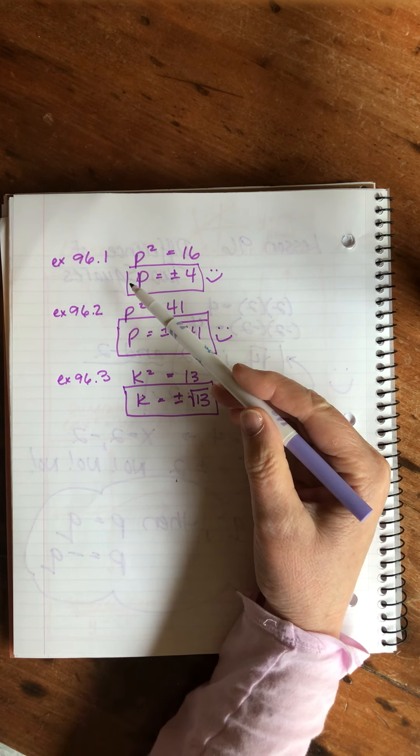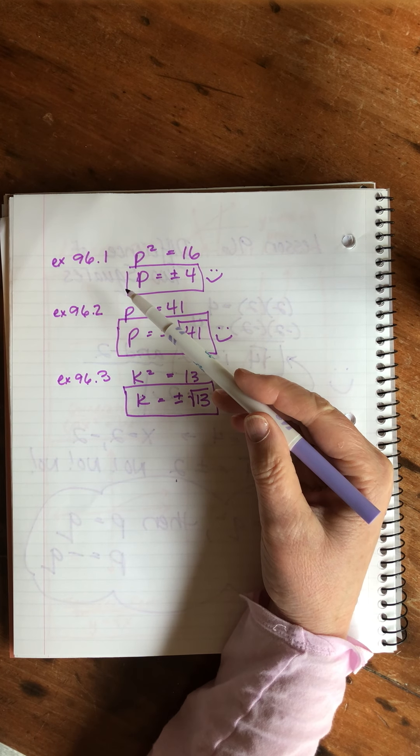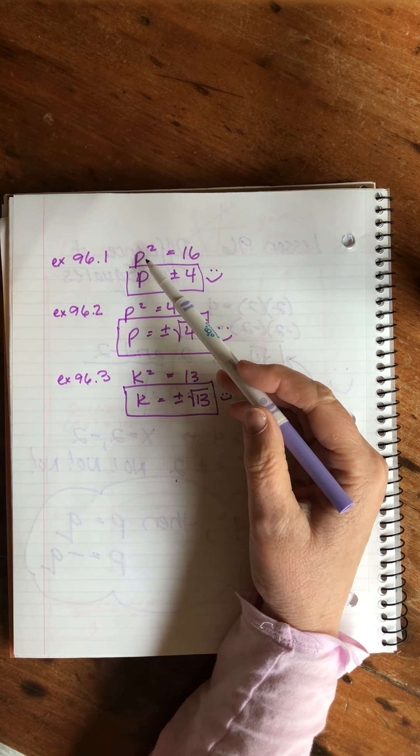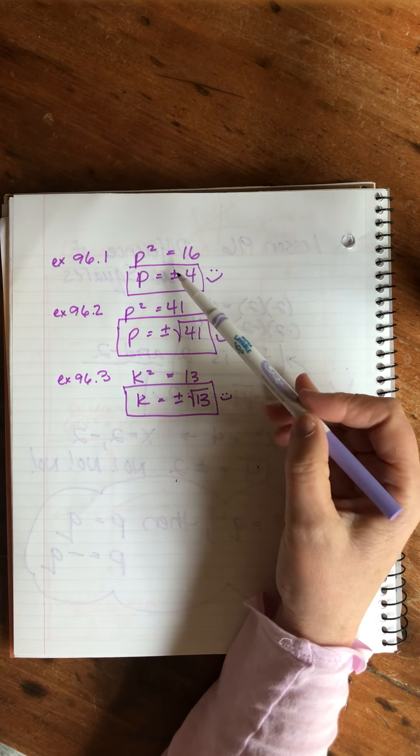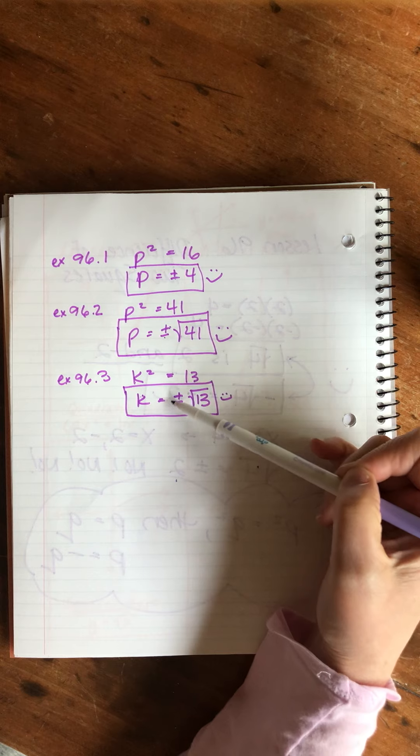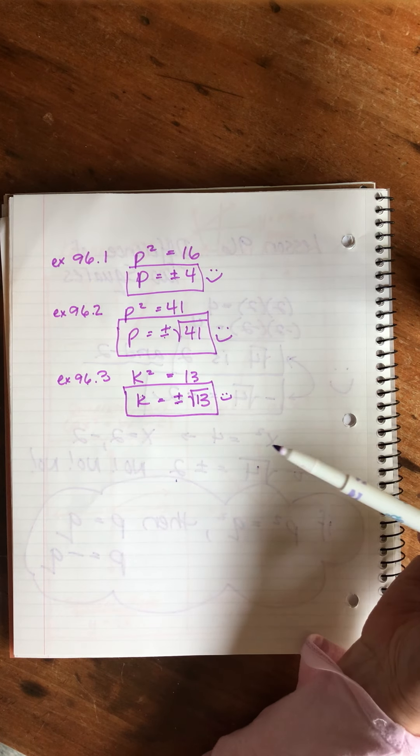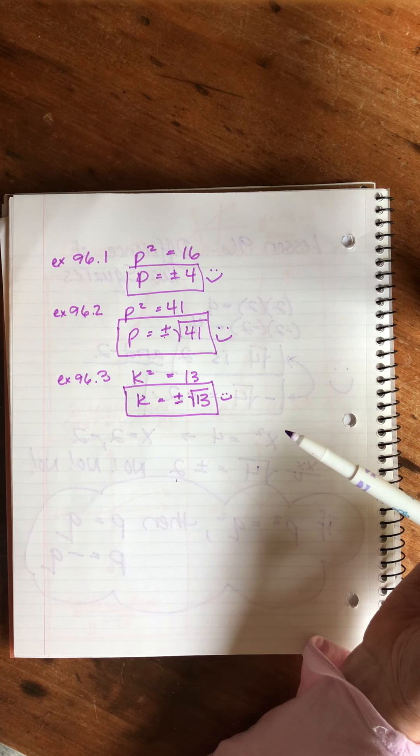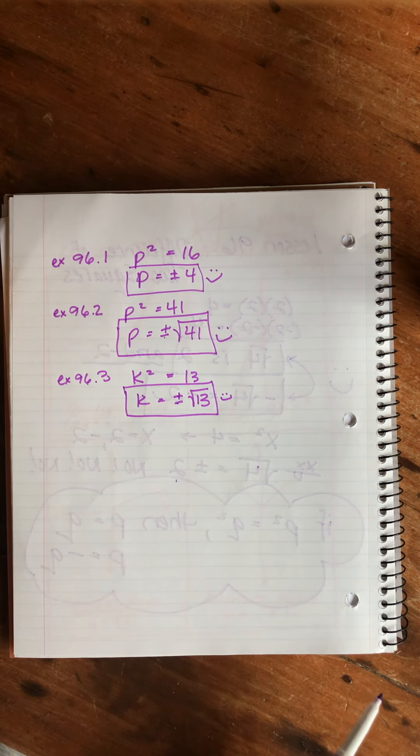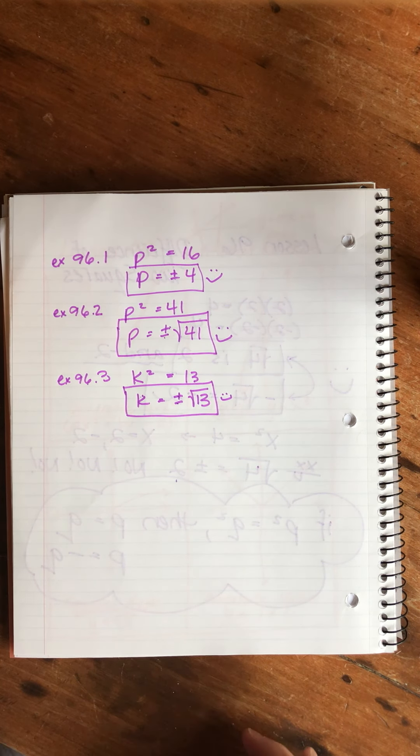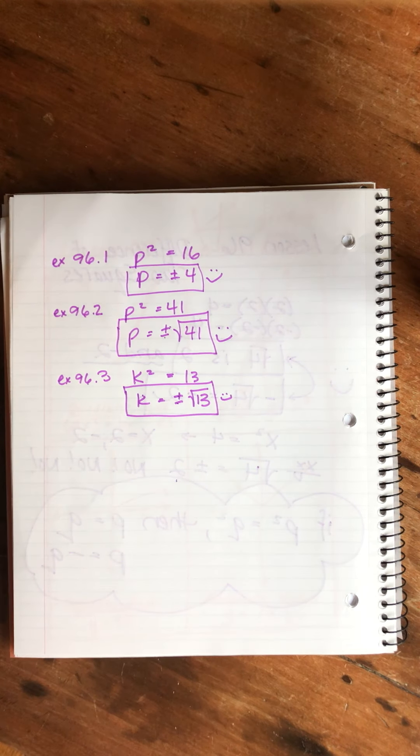Remember that when we are taking the roots of the square like this, when we're solving a square we can use the plus and minus sign. That other stuff I told you about, it's kind of theoretical, don't worry too much about that. If you understand this, you're golden. End of lesson 96. That's got to be the shortest lesson on record. Goodbye.